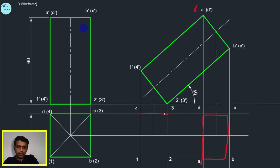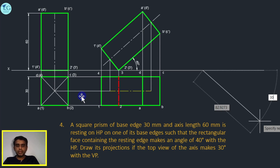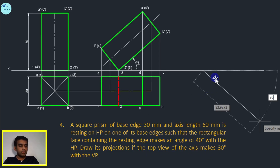This is the boundary line — a continuous thick line. In the next stage, the axis makes 30 degrees with VP. The top view of the axis makes 30 degrees with VP. This is the apparent angle — if the axis makes the top view of the axis, it is the apparent angle, not the true angle.